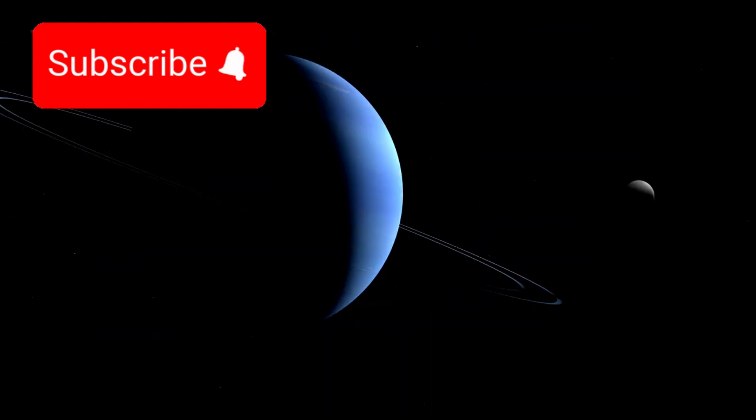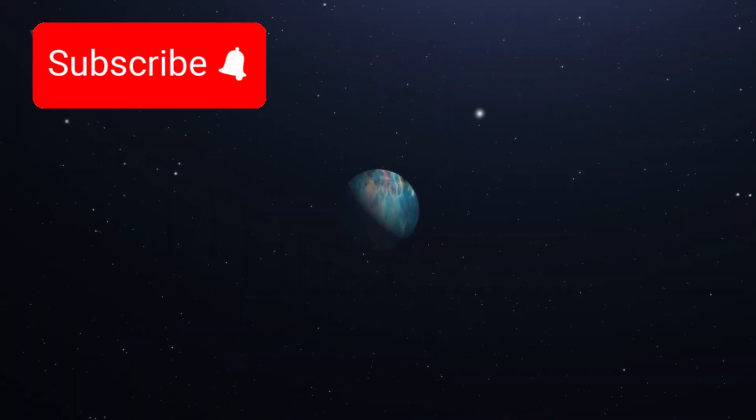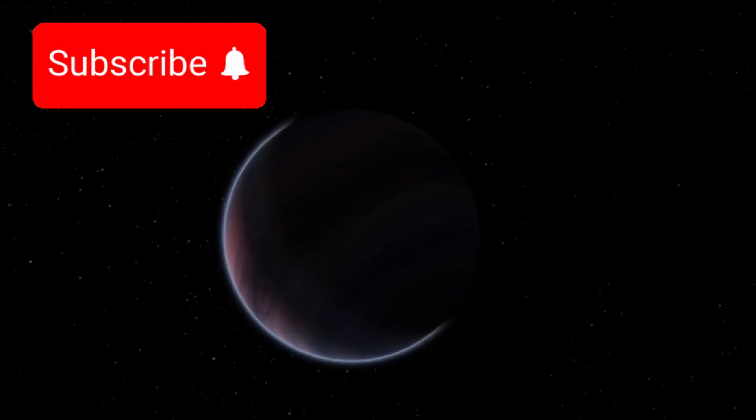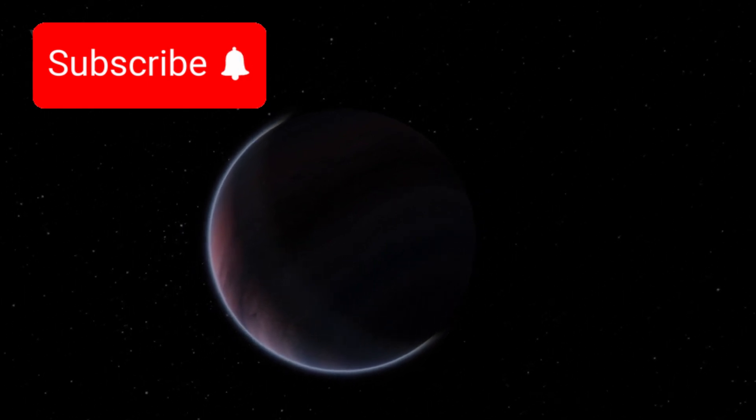K218b belongs to a category of exoplanets known as sub-Neptunes, larger than Earth but smaller than Neptune. These types of planets don't exist in our own solar system, making them uniquely mysterious. They fall somewhere between rocky Earth-like worlds and gas giants, and their unusual properties mean we have little to compare them with.